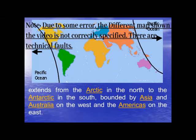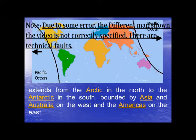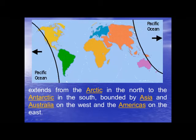First we will look at Pacific Ocean. You can see this is Pacific Ocean. It is surrounded by the Arctic Ocean in the North. In the West, you can see this is America — North America and South America. And in the East, this is Africa and Australia.